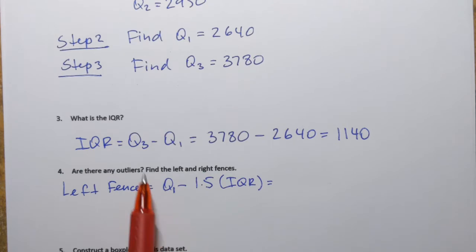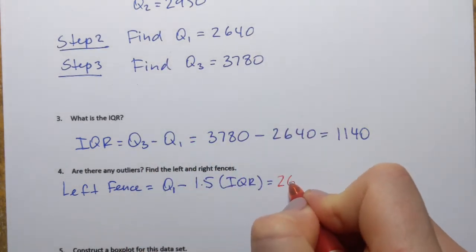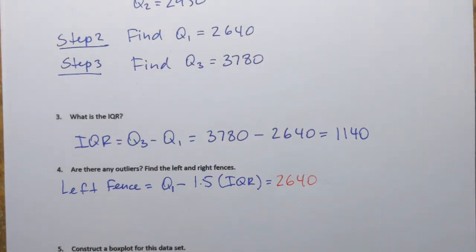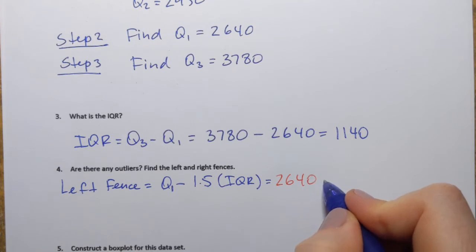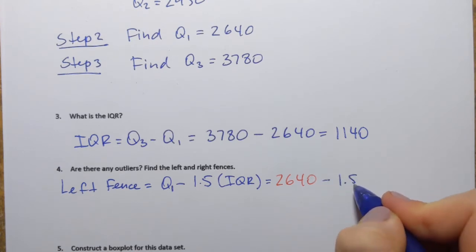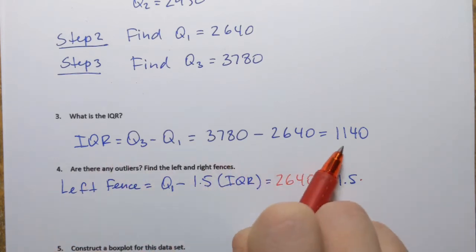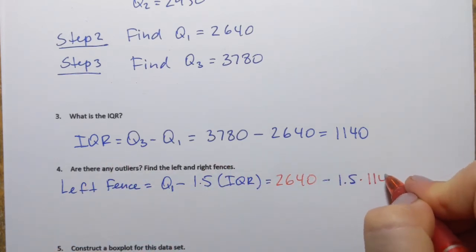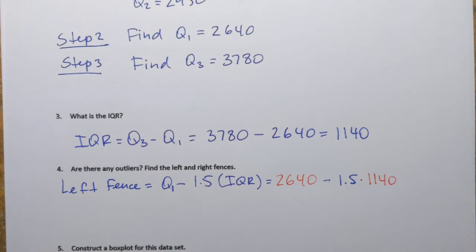So what is Q1? Q1 is 2,640, that's the number I got, minus 1.5, that number is always there, but I have to multiply it by the IQR that I have for this example, 1,140. So if I do that math, I'm going to get 930.